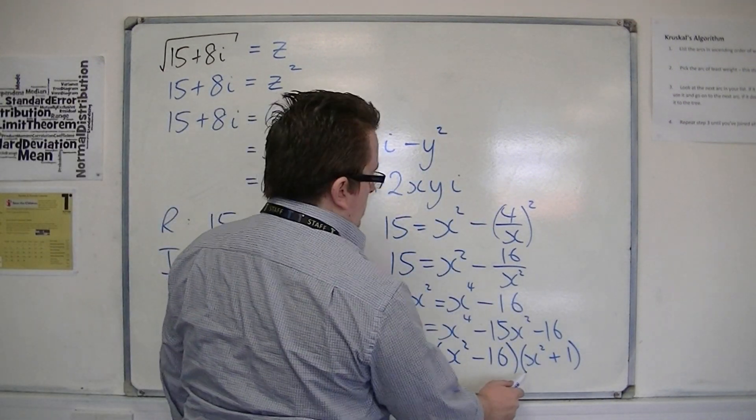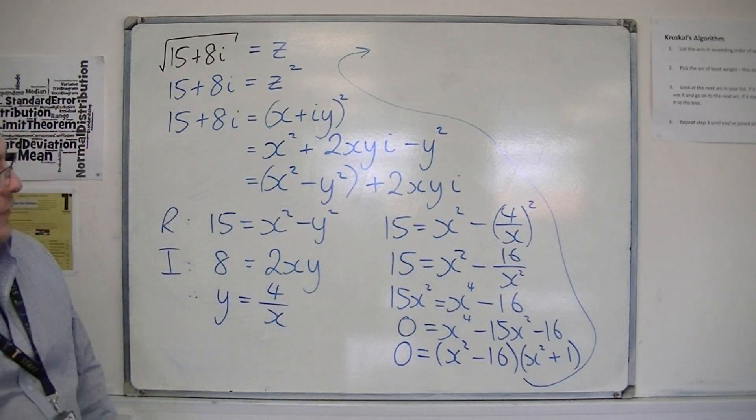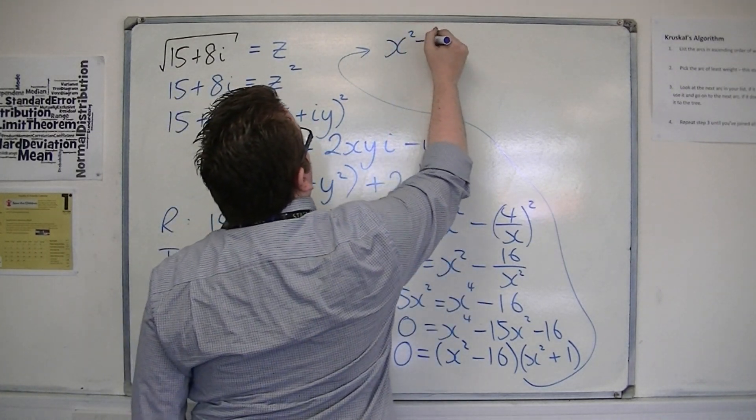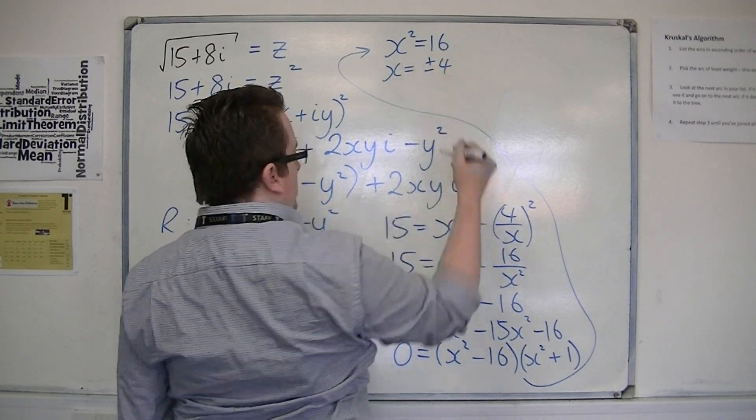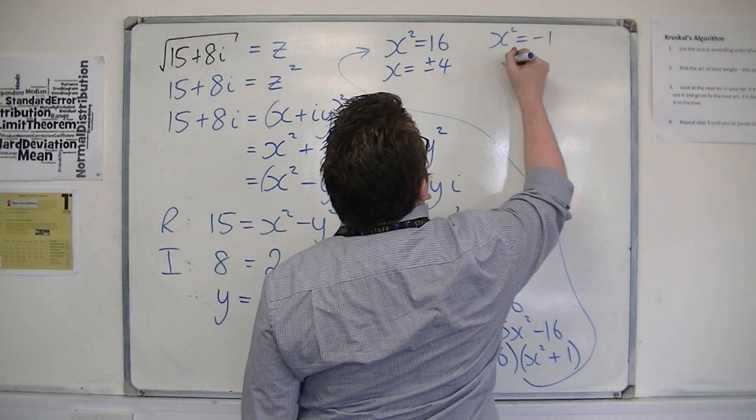So that means I've either got x squared is equal to 16, in which case x is plus or minus 4, or x squared is equal to minus 1, which has no solutions. Well, no real solutions.